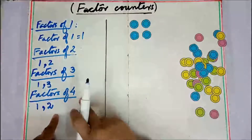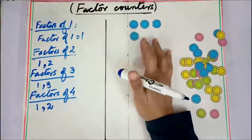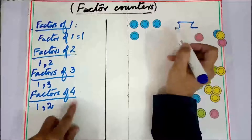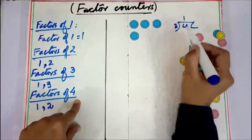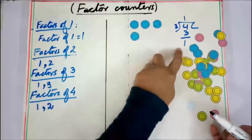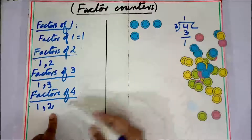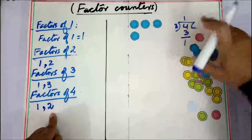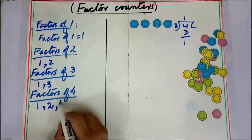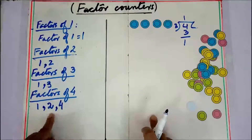Now let's check three — can we make groups of three? No, because there would be only one group of three with one remainder. There must not be any remainder when dividing by a factor. If you divide four by two there is no remainder; if you divide four by four there is no remainder. So this activity helps build concrete understanding for students.